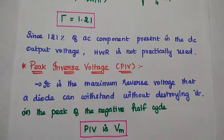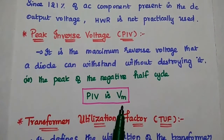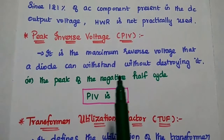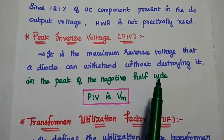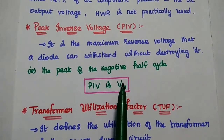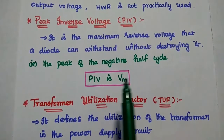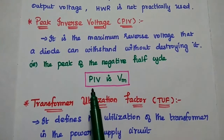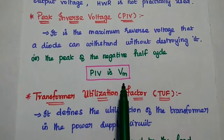The next parameter is Peak Inverse Voltage (PIV). It is the maximum reverse voltage that a diode can withstand without destroying its junction — that is, the peak of the negative half-cycle. Here only one diode is used, so the peak inverse voltage for this half-wave rectifier is Vm.